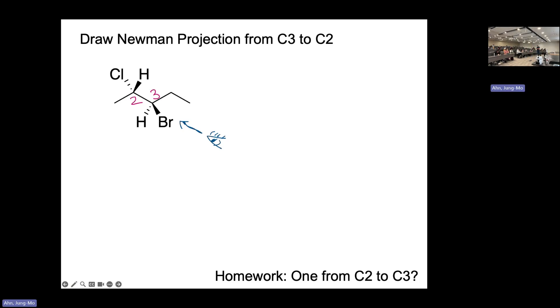If you have to do the Newman projection from C2 to C3, you've got to look at it from the top and look down this way. The Newman projection changes depending on which way you're looking at, so this is critical.